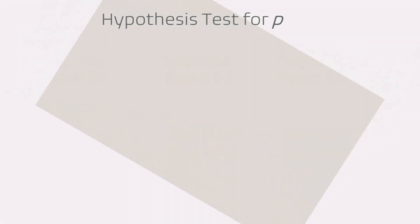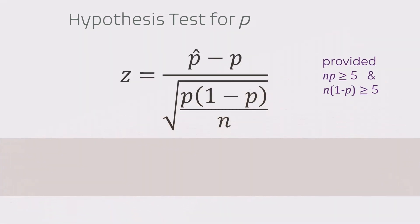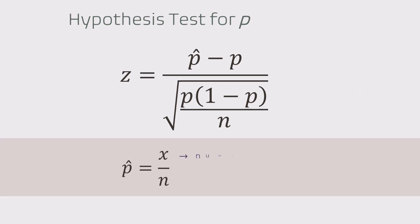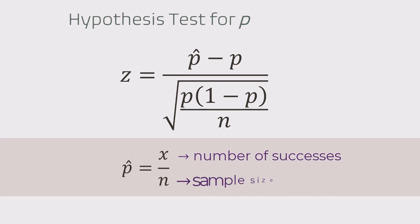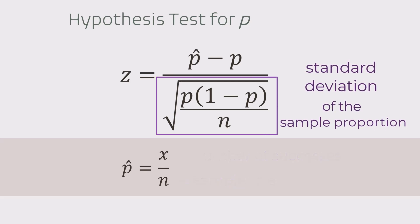We will be using this z-statistic where p-hat is the sample proportion defined by the number of successes x divided by the sample size n. The denominator is the standard deviation of the sample proportion, also called the standard error of the sample proportion.